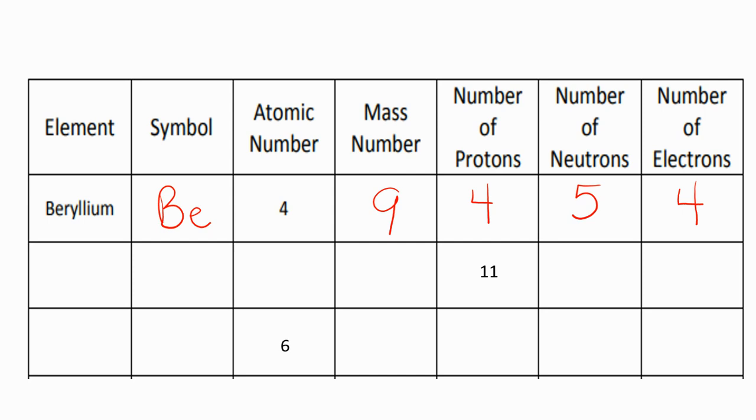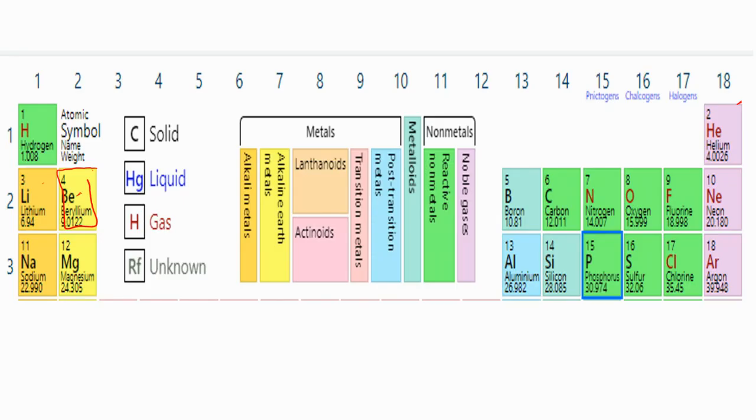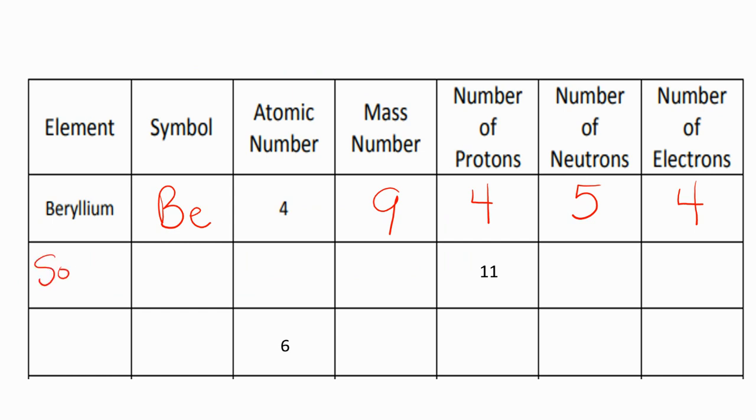Now, the next one. I know that with the number of 11 that the protons are the atomic number. So if I go back and I look for number 11 at the top, it's right here. It's sodium. So sodium has a symbol of Na. So I'm going to go back to my chart, and the element is sodium.